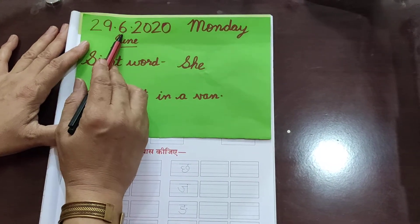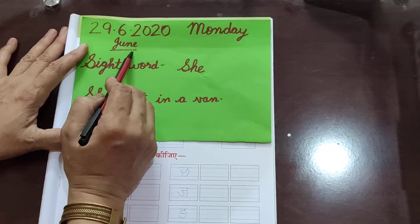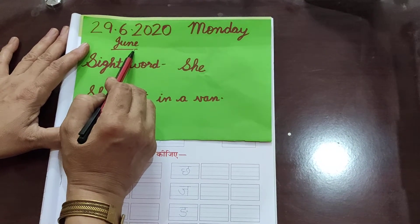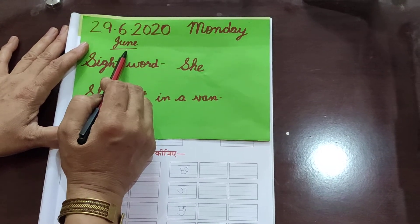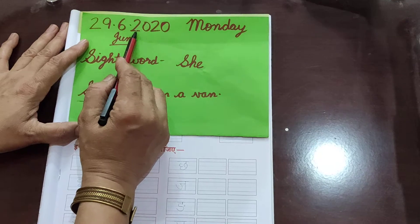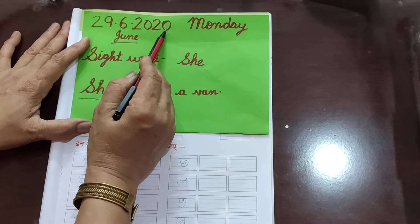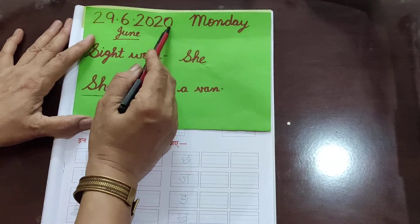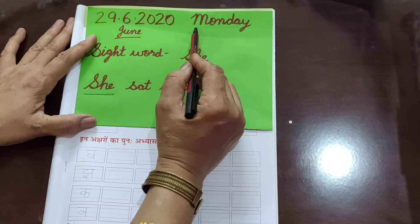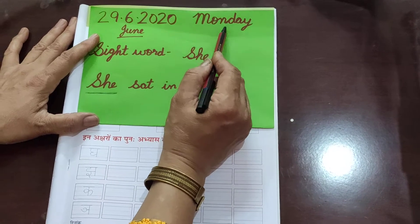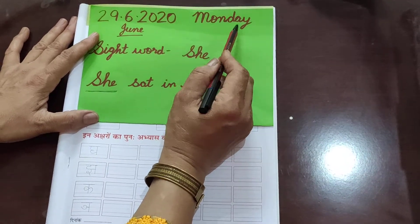And which month is going on? June month is going on. And year is 2020. And what is the day today? Today is Monday.